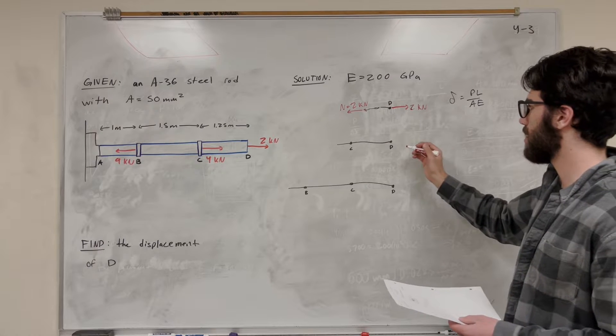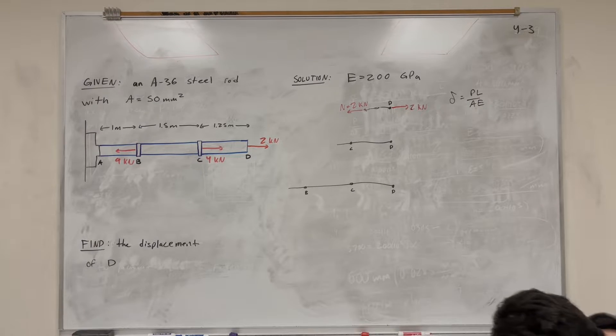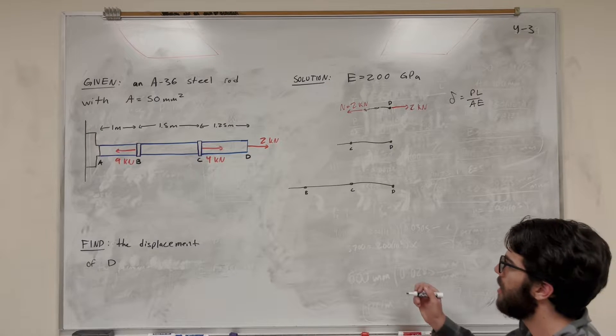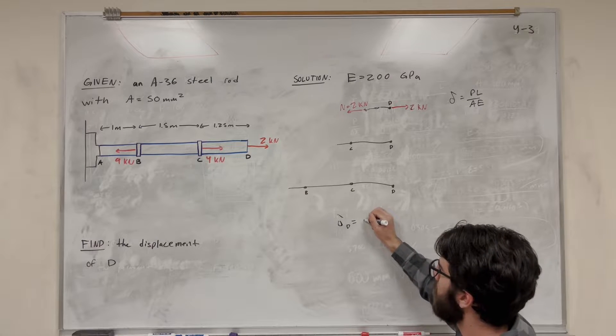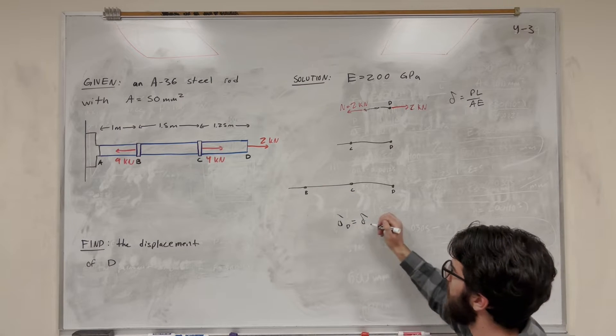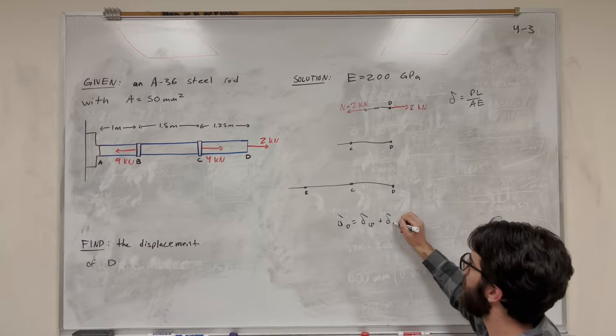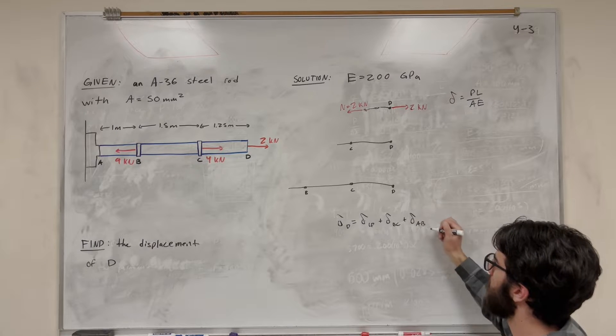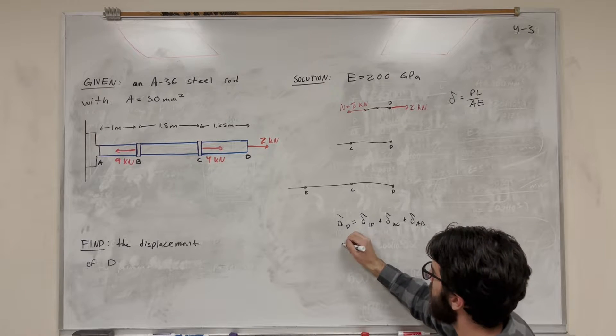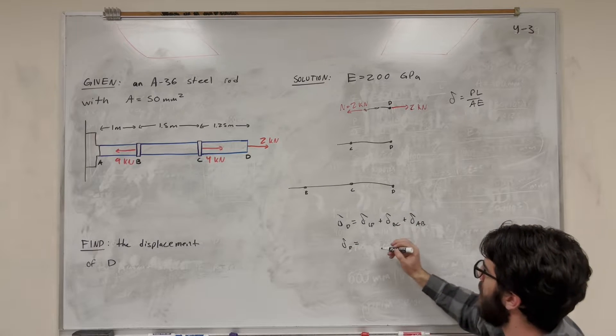So let's do the next point, CD. Why don't we go ahead and write out our equation first before we do this. So displacement of D is going to be equal to the displacement of each one of these parts. So let's start with CD. So that's however much CD gets displaced, plus however much BC gets displaced, plus however much AB gets displaced. So displacement of D equals PL over AE.